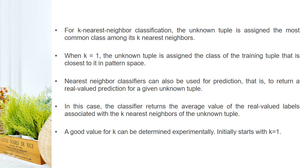For K-nearest neighbor classification, the unknown tuple is assigned the most common class among its K-nearest neighbors. When K = 1, the unknown tuple is assigned the class of the training tuple closest to it in the pattern space. Nearest neighbor classifiers can also be used for prediction, returning the average value of the real-valued labels associated with the K-nearest neighbors. A good value for K can be determined experimentally — starting with K = 1, then K = 2, and so on.